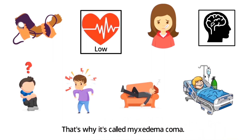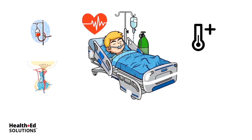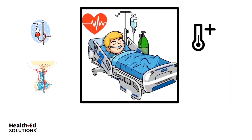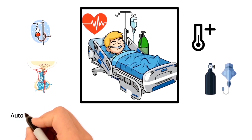What do we do about myxedema coma? We're going to support the blood pressure with fluids and vasopressors, support the heart rate with things like atropine, increase the temperature and keep the patient warm, and always support the airway — because anytime there's a decrease in level of consciousness, aspiration risk is huge.